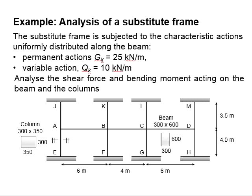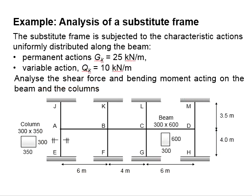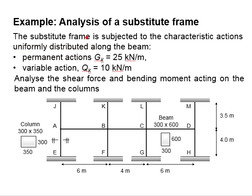Let us try an example to analyze a frame structure. The substitute frame is subjected to characteristic actions uniformly distributed along the beam. The permanent action is 25 kN per meter, while the variable action is 10 kN per meter.